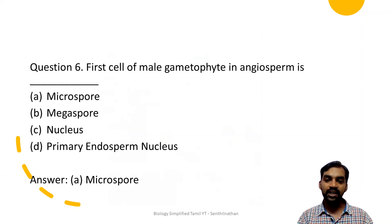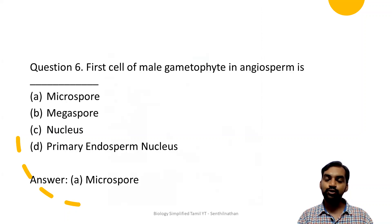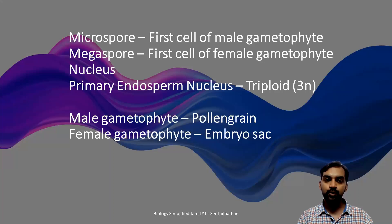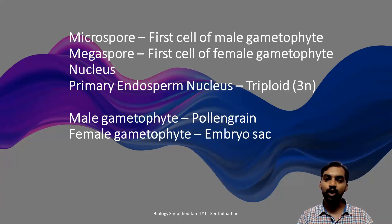Next, the first cell of male gametophyte in angiosperm is microspore. Megaspore is the first cell of female gametophyte. Nucleus is present in all cells. Primary endosperm nucleus is in triploid condition, and that is where endosperm develops. Microspore is the first cell of male gametophyte; megaspore is the first cell of female gametophyte.